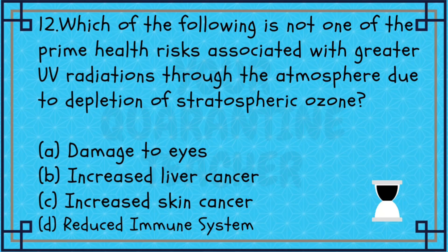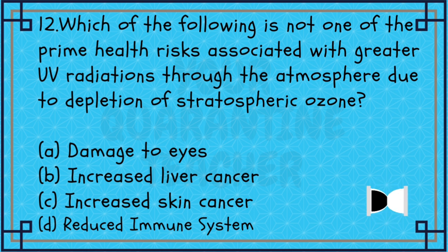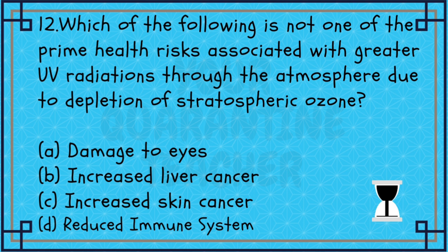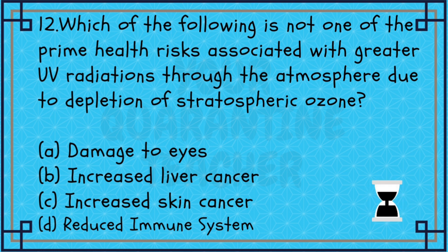Next, 12th question: Which of the following is not one of the prime health risks associated with greater UV radiation through the atmosphere due to the depletion of stratospheric ozone? Options: damage to eyes, increased liver cancer, increased skin cancer, reduced immune system. We already know that skin cancer and reduced immune system are issues. Liver cancer is not a problem — so Option B, increased liver cancer, is the answer.